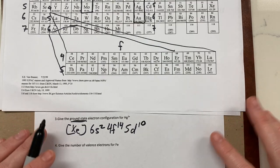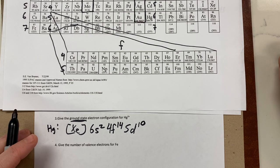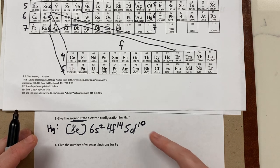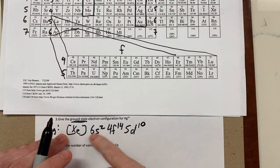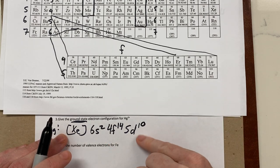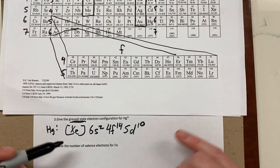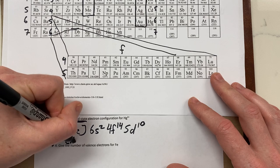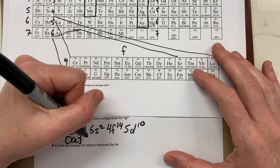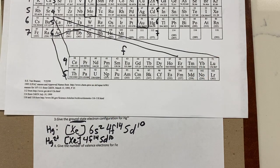Write out the neutral Mercury configuration first, then take electrons away from the appropriate place. For transition metals, we take away from the s block first, not the d block — the d block is highly stable and easier to remove from s. So going from mercury to mercury 2-plus, we remove the 6s2 electrons, leaving us with [Xe] 4f14 5d10.